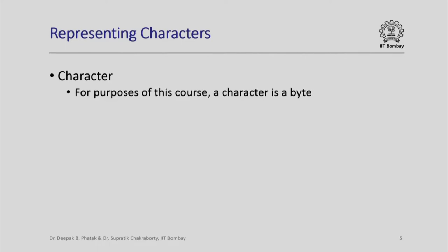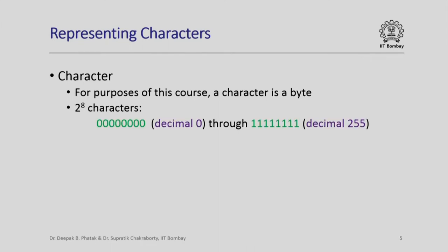When we try to represent a character in a computer, a character is going to be represented by a byte, that is 8 bits. Since you have 8 bits and each bit can take on either 0 or 1, you can represent 2 raised to 8, or 256 different characters, and the values of the corresponding bytes would range from all 0s to all 1s — that is decimal 0 to decimal 255.